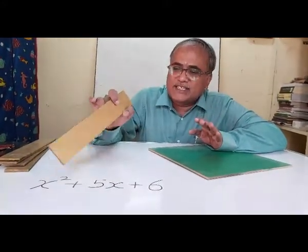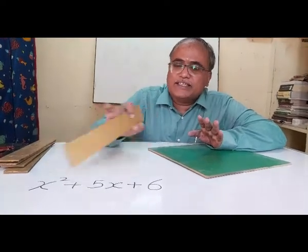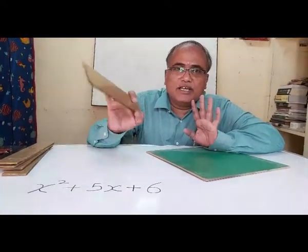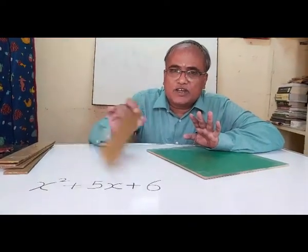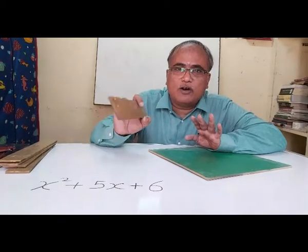But whereas x square is there, something into something means this represents some area. This represents some area. Now how to prove it, how to split it geometrically. This is algebraic polynomial. Geometrically how to do it.